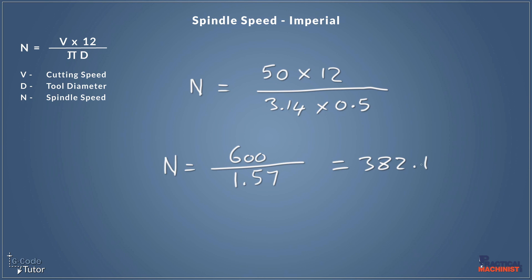Now, of course, 0.1 doesn't matter. When we're talking about spindle speeds, we can ignore that part and just round up to the nearest value. So we've come to a recommended spindle speed of 382 revolutions per minute, when we're using a cutting speed of 50 on a half inch milling cutter. And this is high speed steel. So that's how we arrive at our spindle speed calculations.